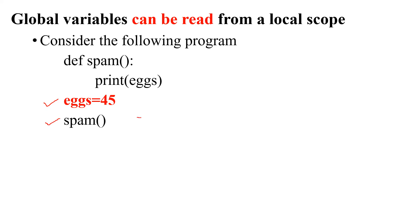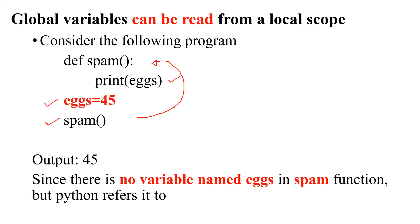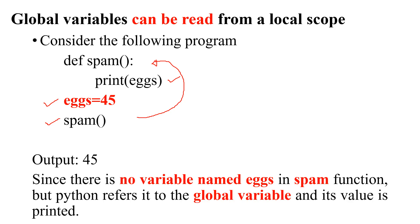The first line of execution is x = 45, assigning the global variable x the value 45. Then I call spam, and execution goes to its definition. Inside spam, I try to print the value of x, but no local variable x is defined inside the function. However, I still get 45 as output because x is a global variable — defined outside the function — and its value can be accessed inside the function.